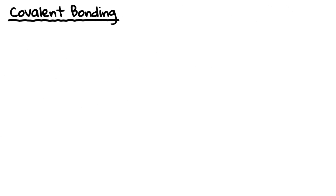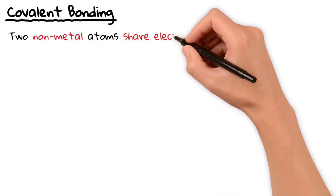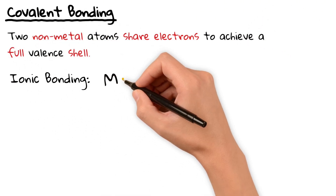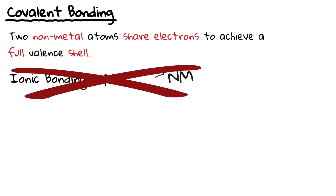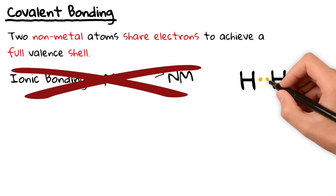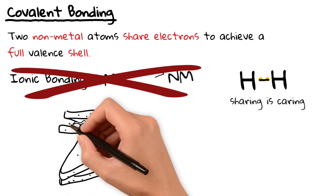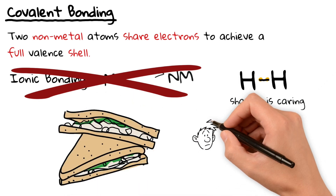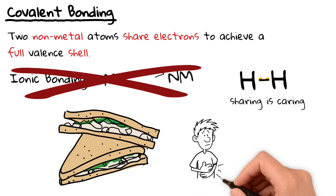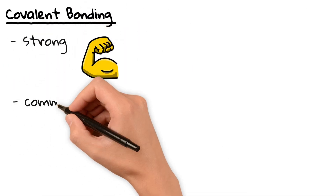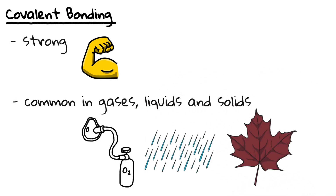What exactly is covalent bonding? It happens when two nonmetal atoms share electrons to achieve a full outer shell. Unlike ionic bonding where electrons are transferred, nonmetals don't like giving away electrons — instead, they share. Imagine you and a friend each have half a sandwich but you're both still hungry. Instead of keeping your halves separate, you combine them to make one full sandwich. That's how covalent bonding works — both atoms combine their electrons so they feel complete. Covalent bonds are strong and commonly found in gases, liquids, and solids.